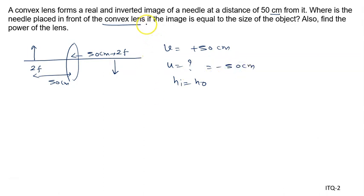So needle should be placed at a distance 50 cm from the convex lens. Now we have to find the power of the lens. 2f value is given to us as 50 cm, then f can be written as 25 cm.